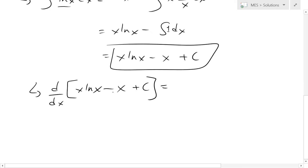So if you take the derivative, the derivative of x ln x using the product rule, that's just 1 times ln x. Now we plus x times the derivative of ln x, which is 1 divided by x. And now the derivative of negative x, that's just negative 1. Derivative of a constant is just 0.